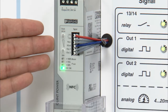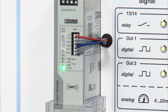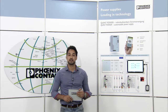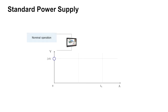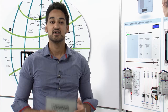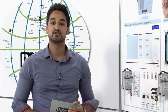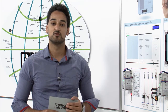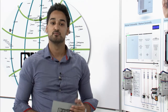Furthermore there are three signal contacts for comprehensive and preventive monitoring. To illustrate this, here is one example. Lots of applications are expanded over time, so if you add additional loads to your application the power supply needs to deliver more and more power. But if you exceed the limits of a standard power supply it will lead to a breakdown and in worst case to a downtime of your production. In such a case it will be necessary to replace the standard power supply with a more powerful device — but this should happen before the breakdown.